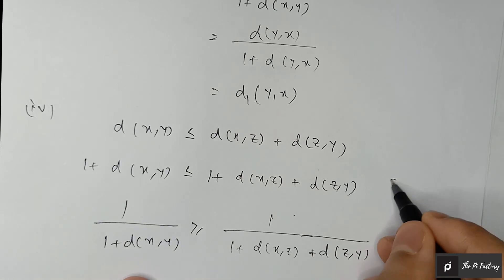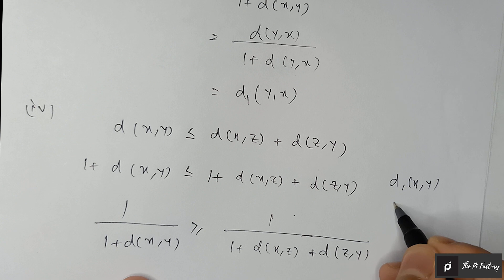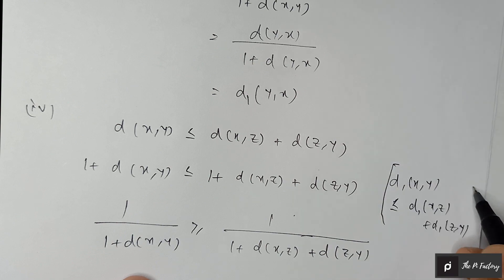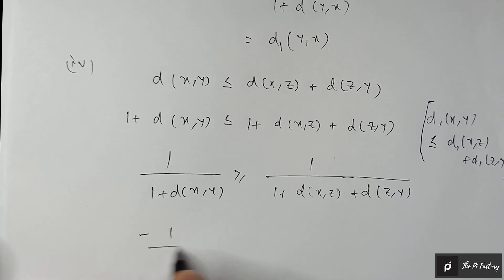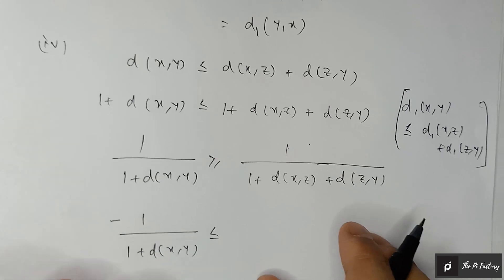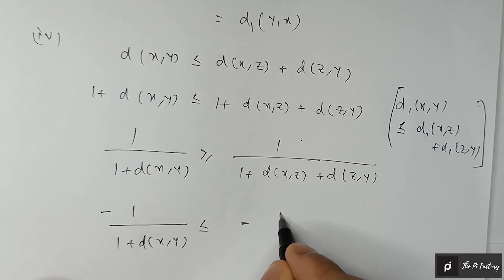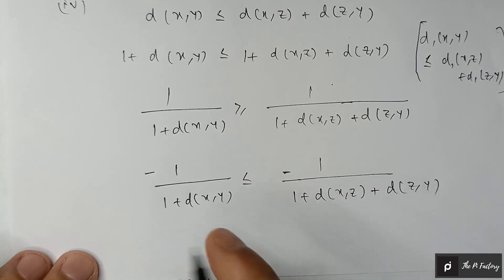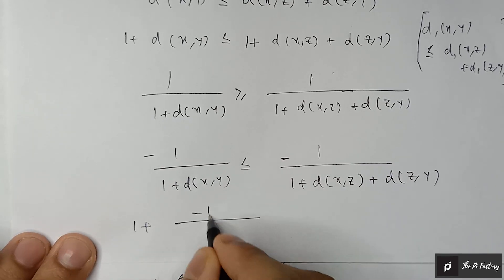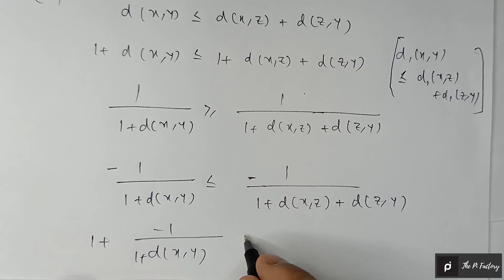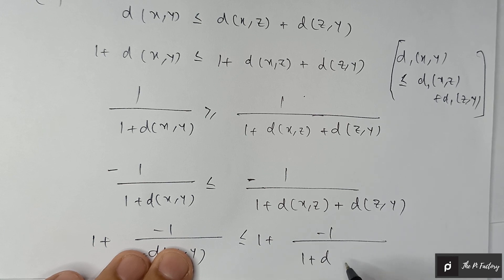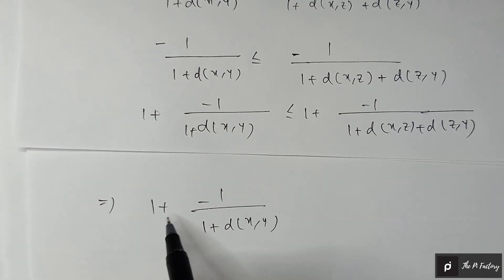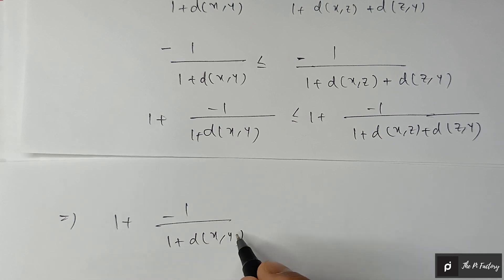Our aim is to prove d₁(x, y) ≤ d₁(x, z) + d₁(z, y). Multiplying by minus one changes the inequality sign from greater than or equal to less than or equal to. Then adding one to both sides again, we manipulate the expression further.